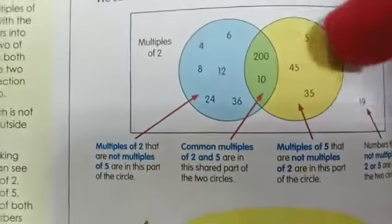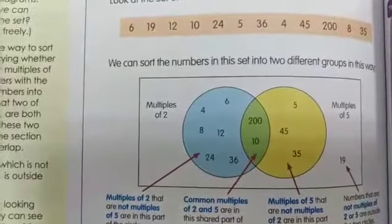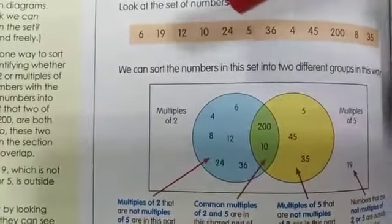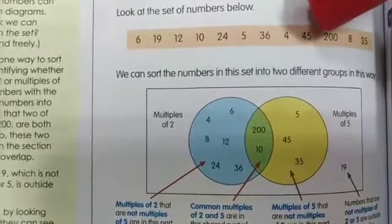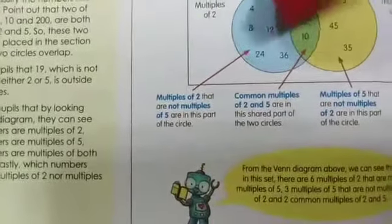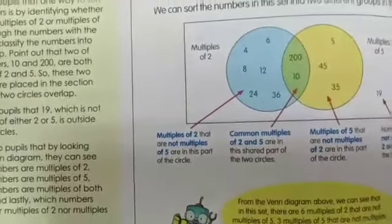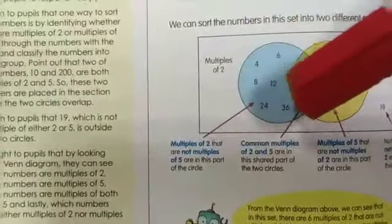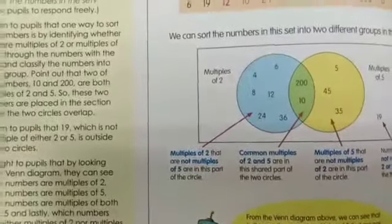In the other circle, we want the multiples of 5, like 5, 10, 15, 20, and so on. If you go back again to the set of numbers, you can notice that we have only 5, 45, and 35 as multiples of 5. We can put the numbers 4, 6, 8, 12, 24, 36 in this part of the circle as multiples of 2 only, and we can put the numbers 5, 45, and 35 as multiples of 5 only in the second circle.